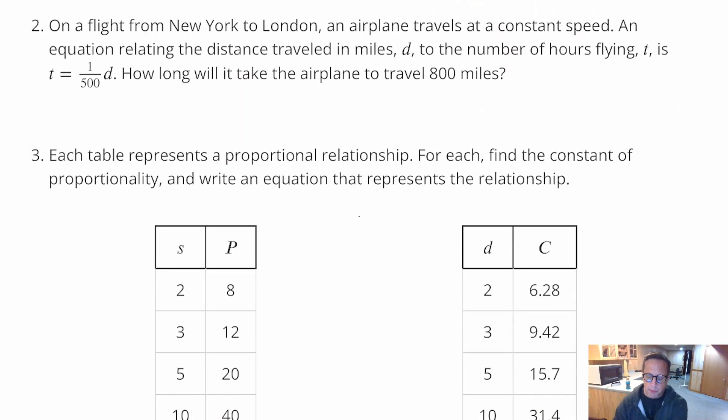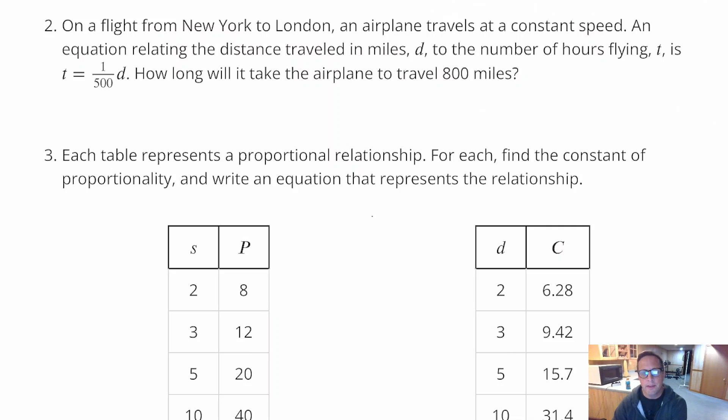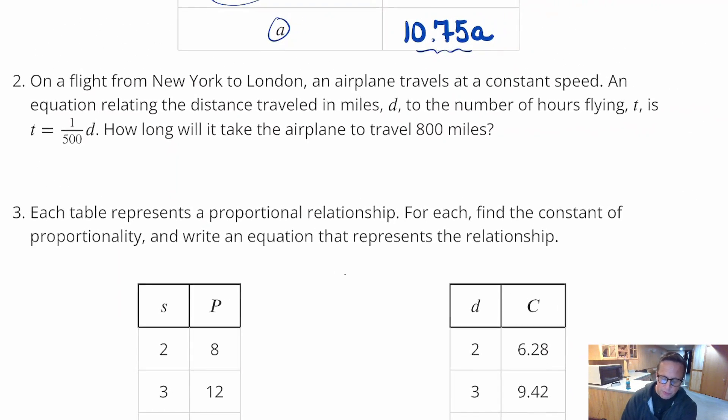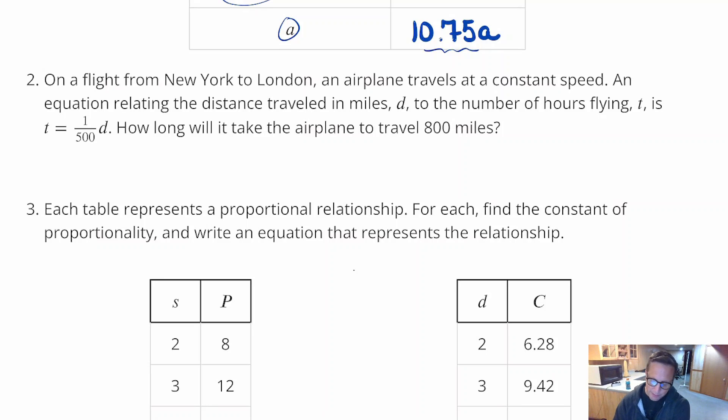For number two, on a flight from New York to London, an airplane travels at a constant speed. An equation relating the distance traveled in miles, D, to the number of hours flying, T, is T equals 1/500th D. So 1/500th times the distance is equal to time. So how long will it take for the airplane to travel 800 miles? So this is kind of already set up for you. This is giving us the distance, which is right here in that equation. So what that equation is telling us to do is to multiply 1/500th times the distance, times 800.